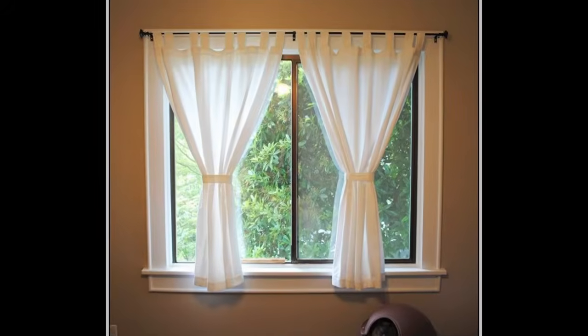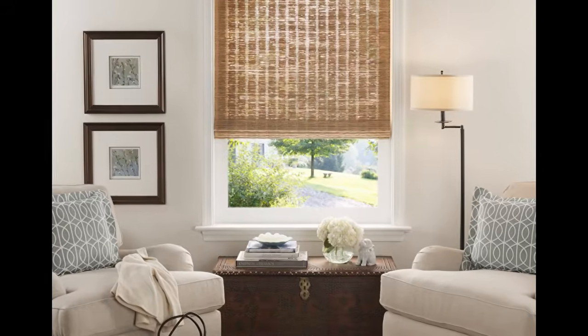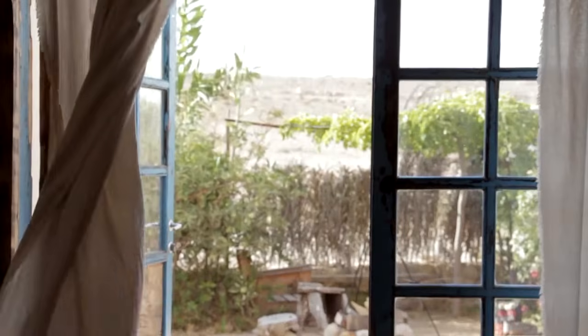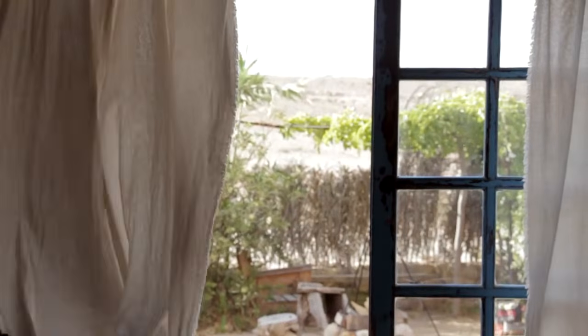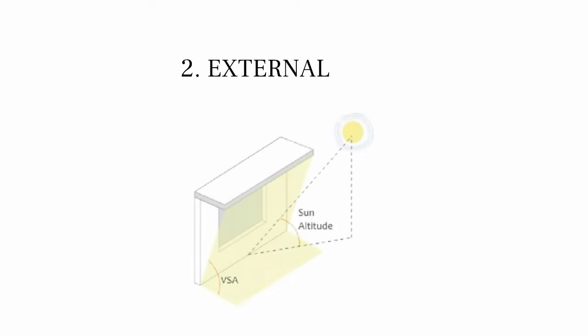Shading devices can be found internally and externally. Curtain, louver blind, and blackout blind are some examples of internal shading devices; they are mainly used to provide visual comfort by eliminating glare. External shading devices are primarily used to control the amount of radiation that penetrates inside the building.